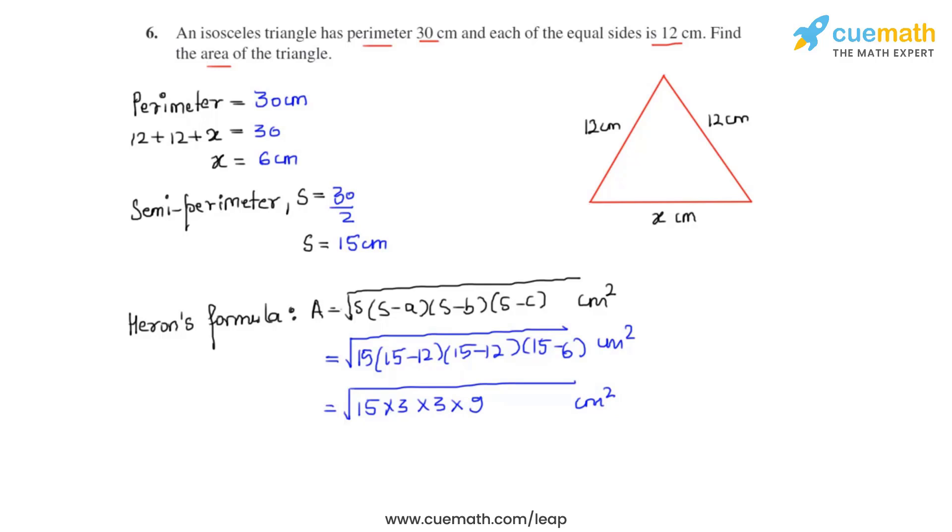On further calculation we get that as 15 times 3 times 3 times 9. So now that gives us the area, the required area of this triangle to be equal to 9 root 15 centimeters squared, and that is the answer for this question.